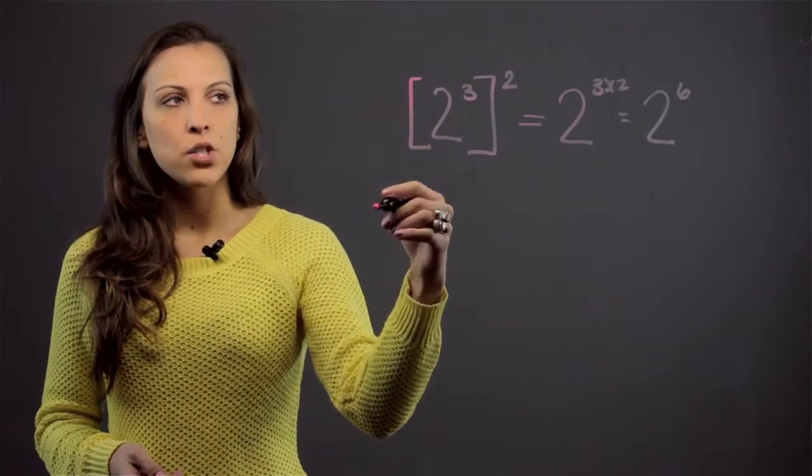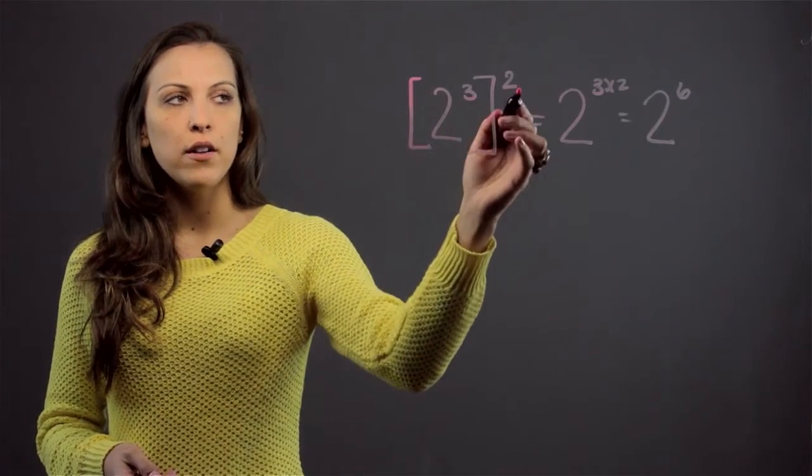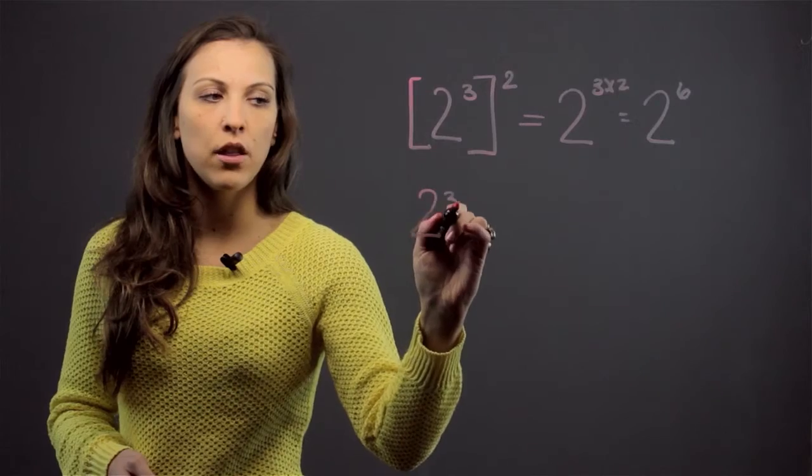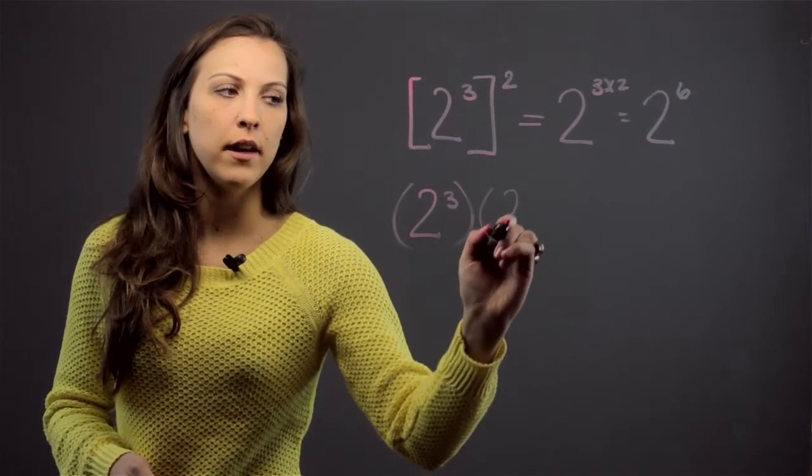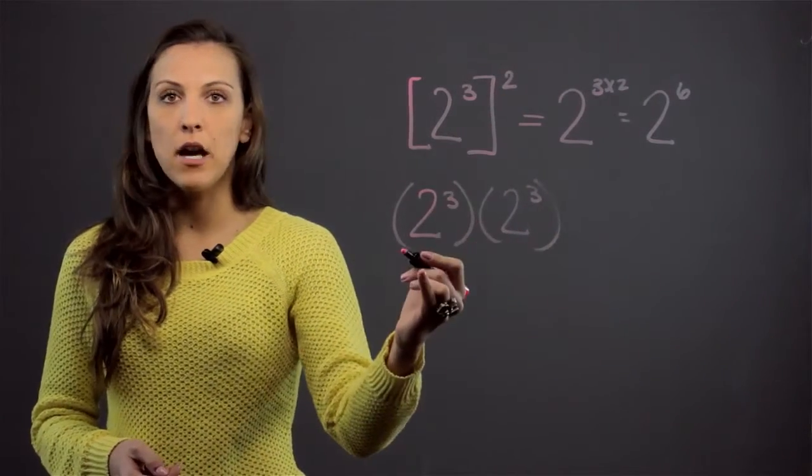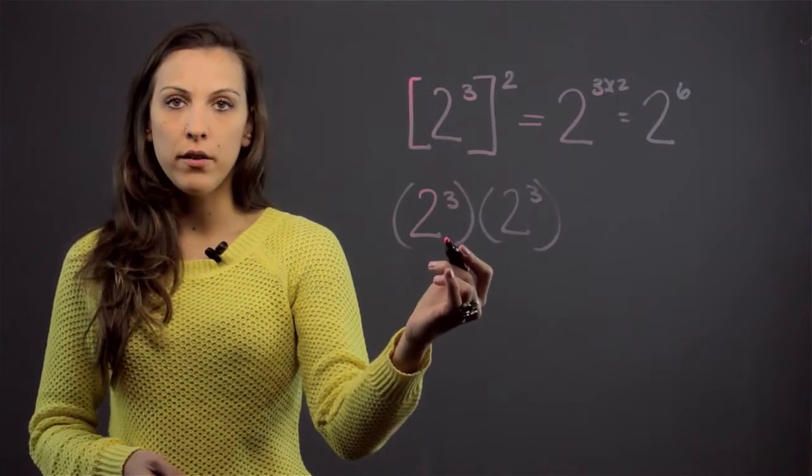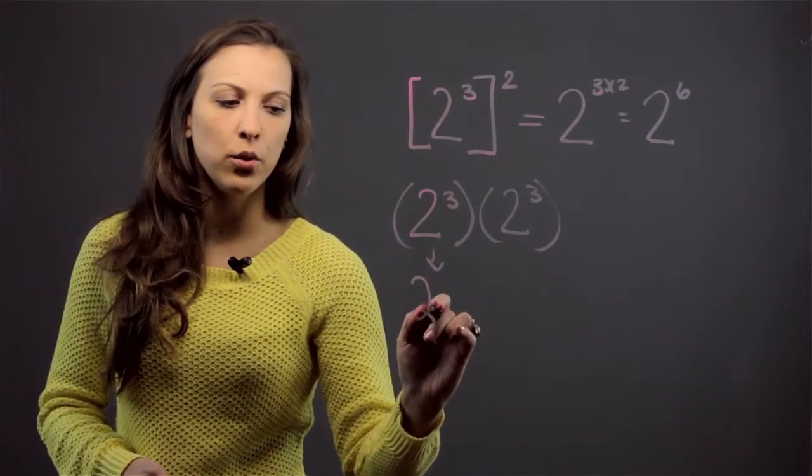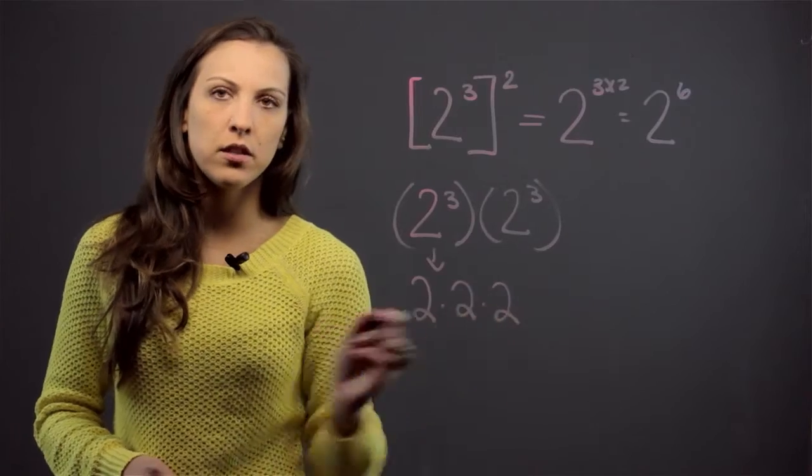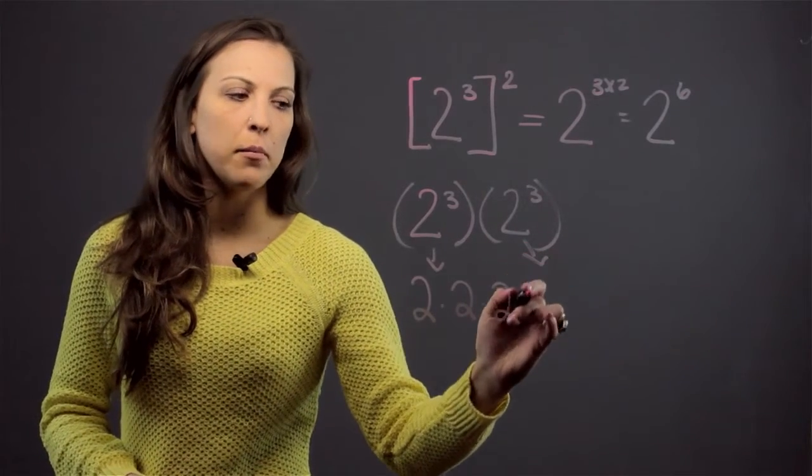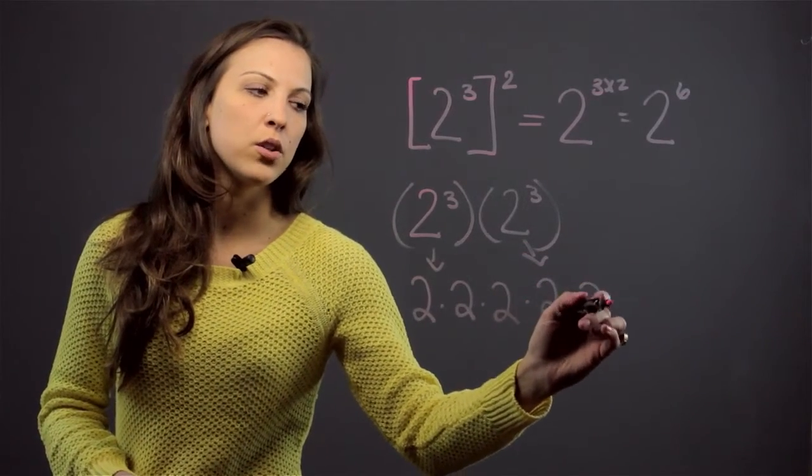And the way that we can expand this to show you what this means is 2 to the 3rd to the 2nd means that I'm doing 2 to the 3rd twice, right? The exponent tells me how many times to multiply the base by itself. And then 2 to the 3rd individually means that I'm doing 2 times 2 times 2. And this 2 to the 3rd means the same thing, 2 times 2 times 2.